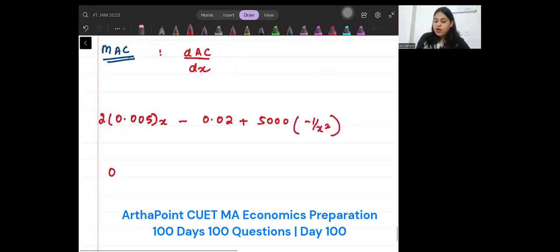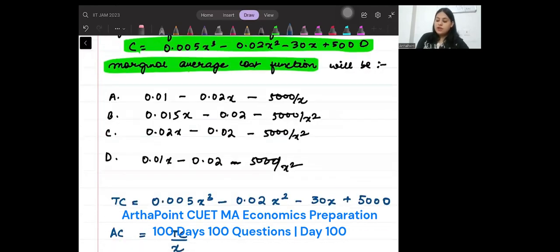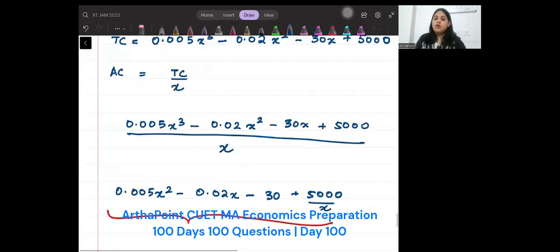So this will be 0.01x, right? 0.01x - 0.02 - 5000/x². So the answer to this question will be D. Is this clear? Okay. Now let me give you the question of the day.